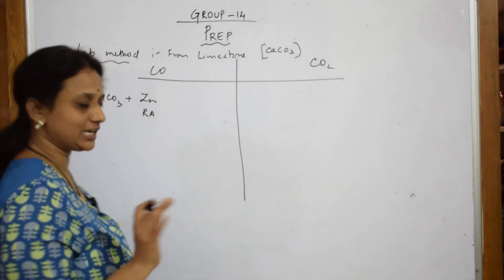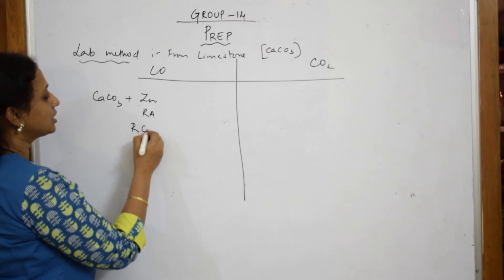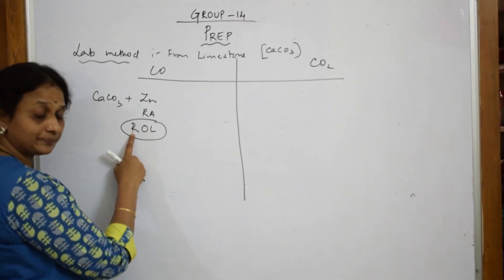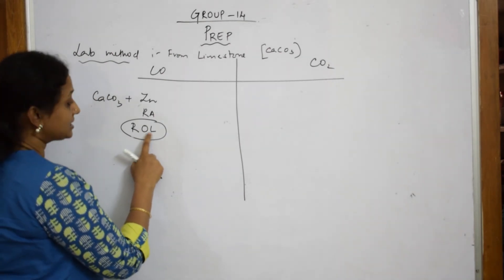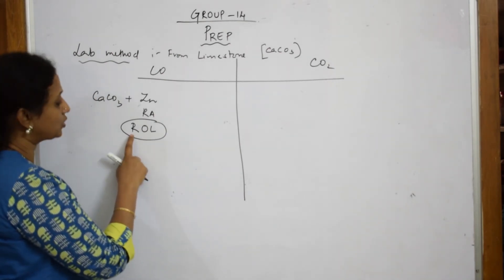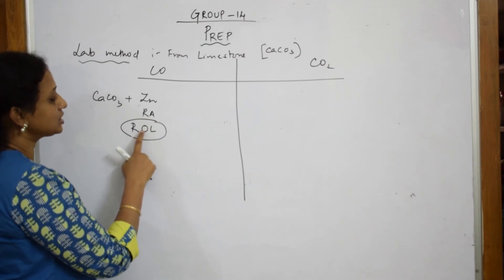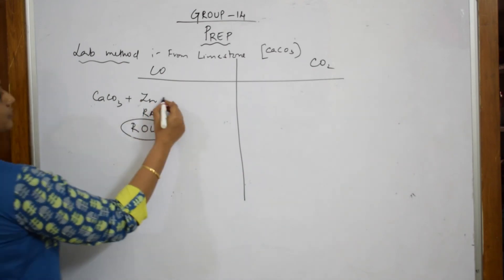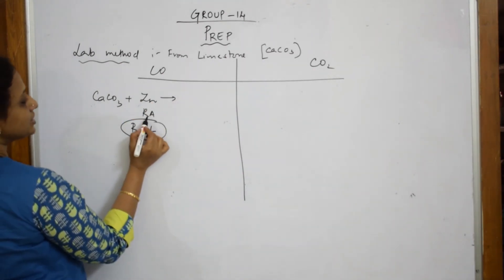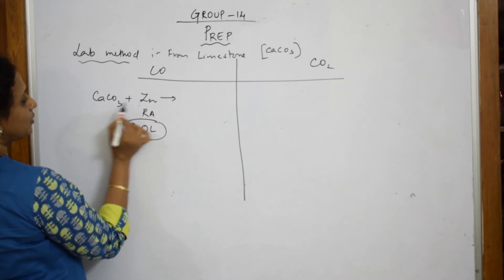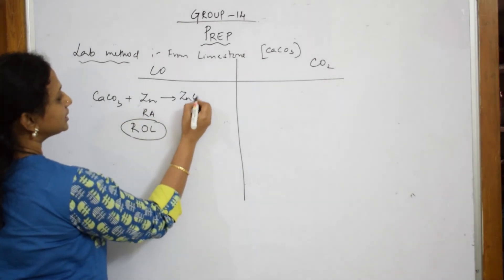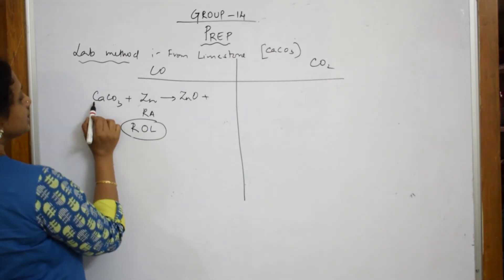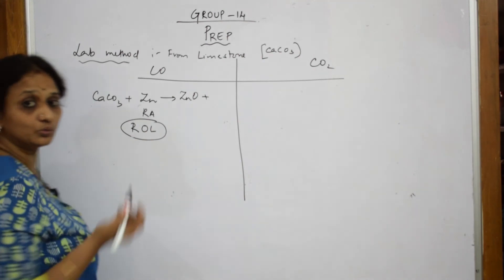Remember this: reducing agent loses electrons and itself gets oxidized — that is what R-O-L means. Now observe carefully. Zinc is acting as a reducing agent. It is going to pick up one oxygen from the calcium carbonate. So it becomes ZnO — that is why it is oxidized. What else is left? You are left with CaCO2.